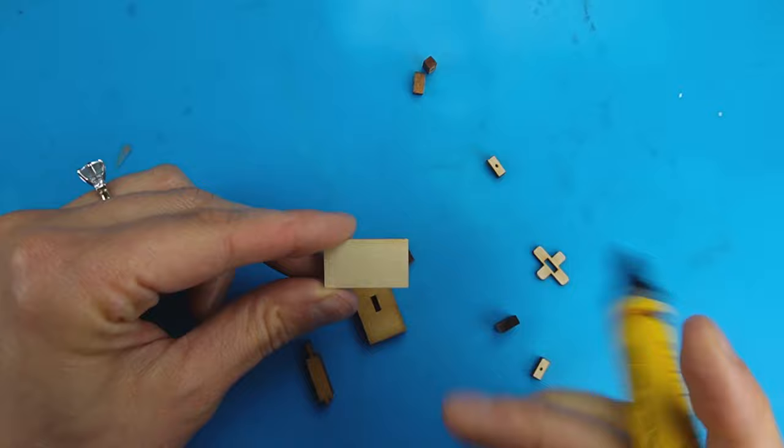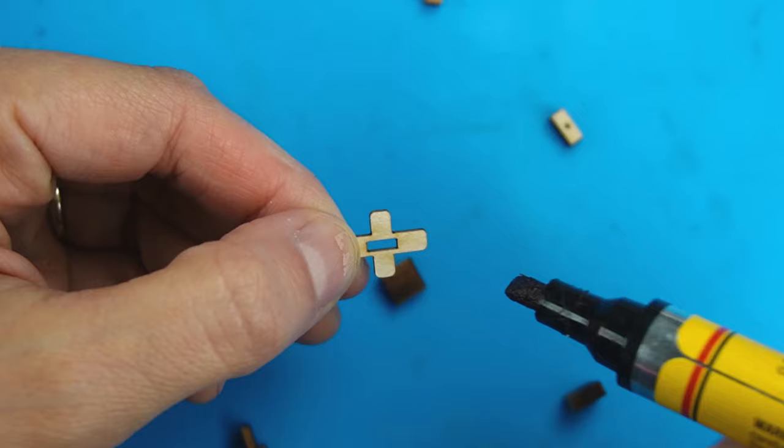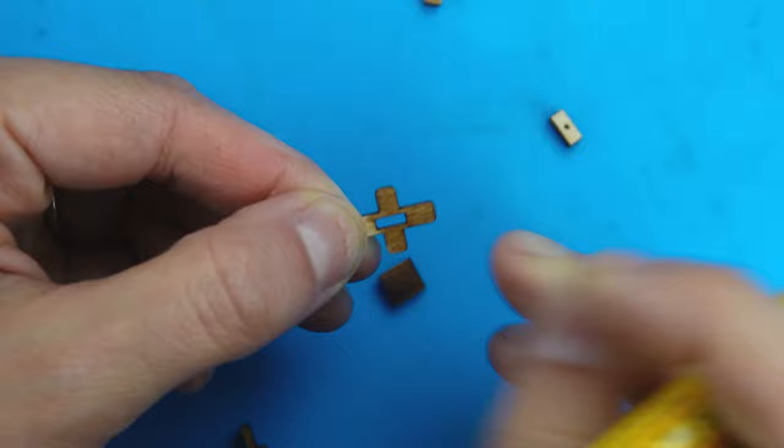If you choose to assemble the table before staining, you run the risk of areas of leaked glue repelling the stain and leaving pale spots, which is why the kit suggests staining first.